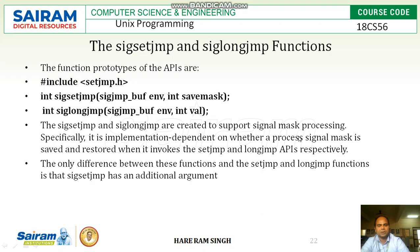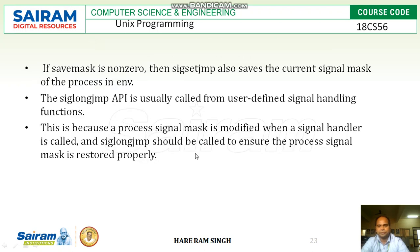The sigsetjmp and siglongjmp functions are created to support signal mask processing. It is implementation dependent on whether a process signal mask is saved and restored when it invokes setjmp and longjmp respectively. The only difference between these functions and setjmp/longjmp is that sigsetjmp has an additional argument — sigsetjmp and siglongjmp each have two arguments, whereas setjmp and longjmp have only one.